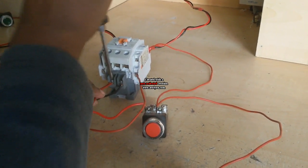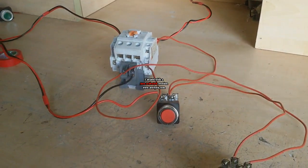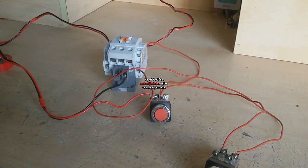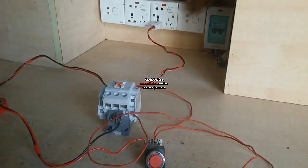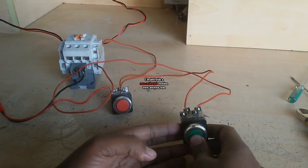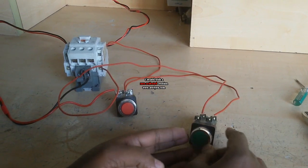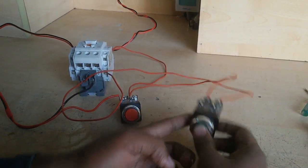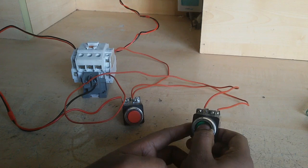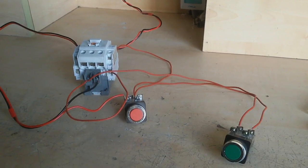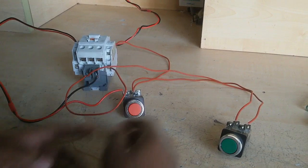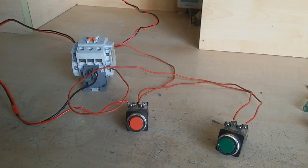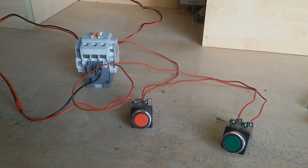Now I connect this point to A2 terminal and now supply is on. Now I push this button, start push button switch, and see the magnetic contactor starts. In this position again push this switch, not stop this magnetic contactor. Now I push stop push button switch, the magnetic contactor is stopped. It is very easy to make, you can make it very easily. I think you understand that.